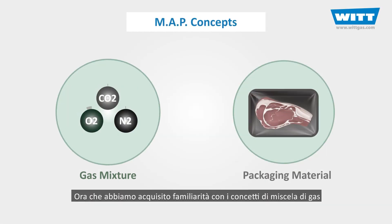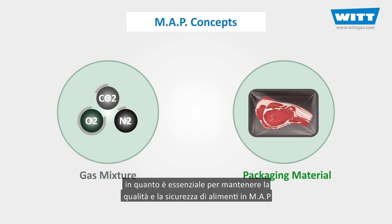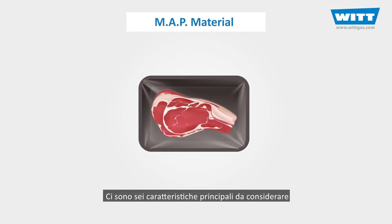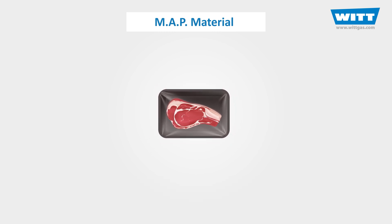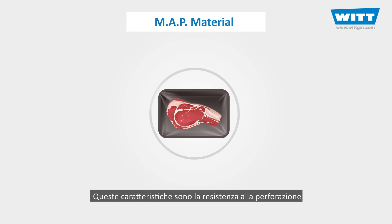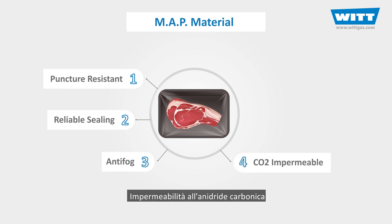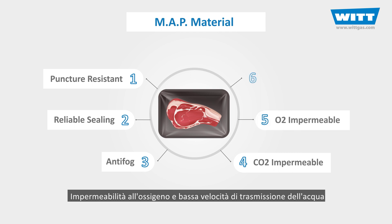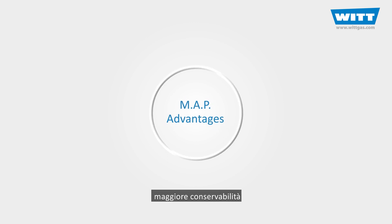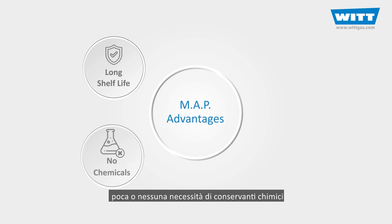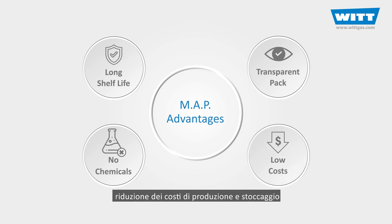Now that we're familiar with the gas mixture concepts, let's see how we select the best packaging material, as it's essential to maintain the quality and safety of MAP foods. There are six main characteristics to consider when selecting packaging material: resistance to puncture, sealing reliability, anti-fogging properties, carbon dioxide impermeability, oxygen impermeability, and low water transmission rate. All in all, there are lots of benefits to using MAP, including increased shelf life, little or no need for chemical preservatives, improved presentation, clear view, and reduction in production and storage costs.